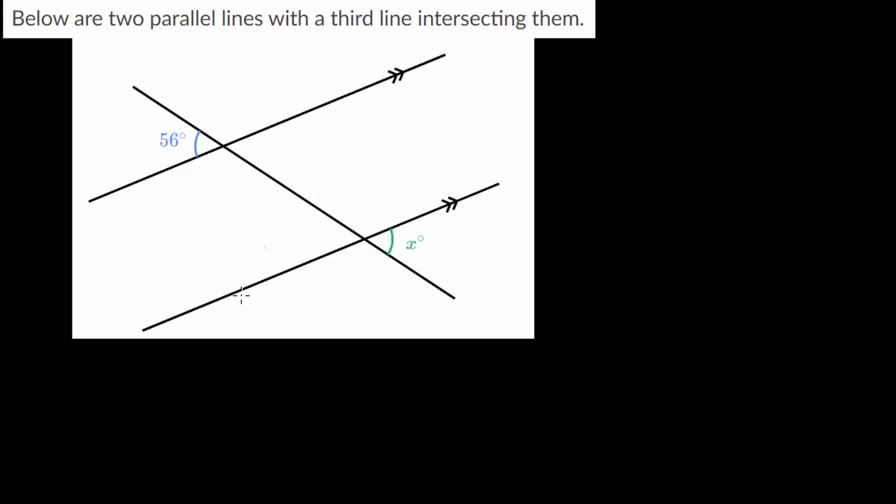When two lines are parallel and they're cut by a transversal, if we know one of the angles, we can figure out the rest of the angles. And let's start with this angle 56. And there are many approaches to figure out this angle x.